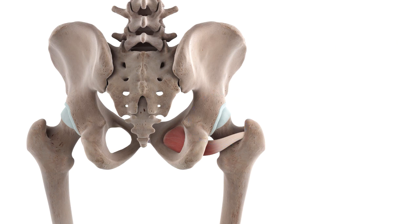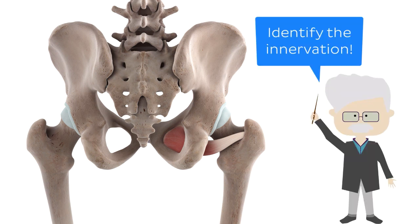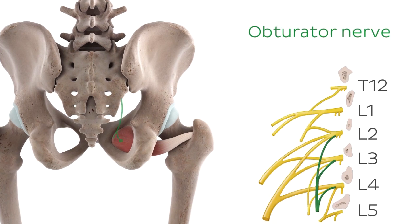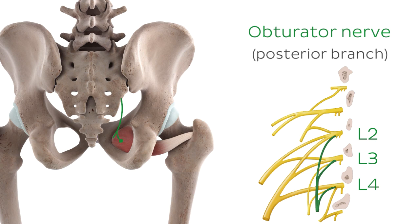Now that we know the anatomy of our star muscle, we also need to have a look at what nerve instructs it to carry out its functions. Conveniently, the obturator externus is innervated by the obturator nerve, which is formed by the L2, L3, and L4 nerve roots of the lumbar plexus. Specifically, it is innervated by the posterior branch of this nerve.